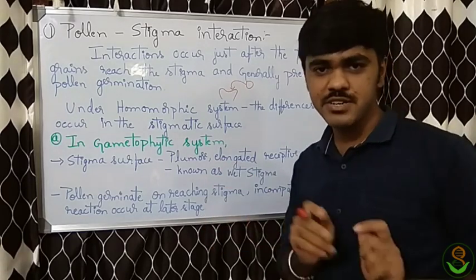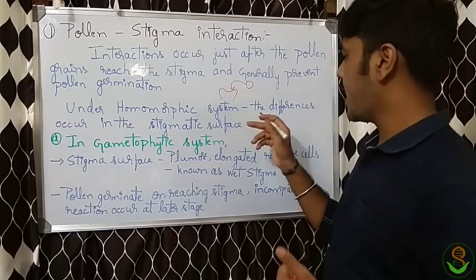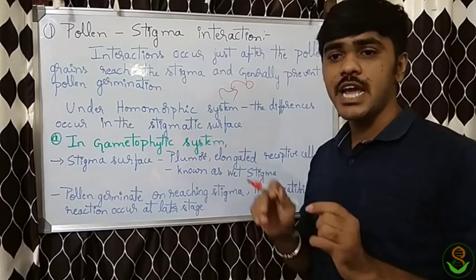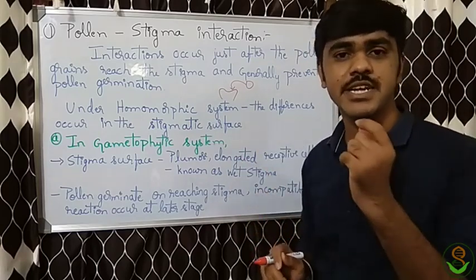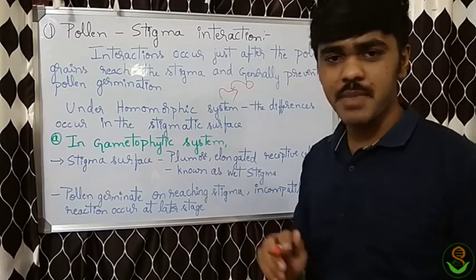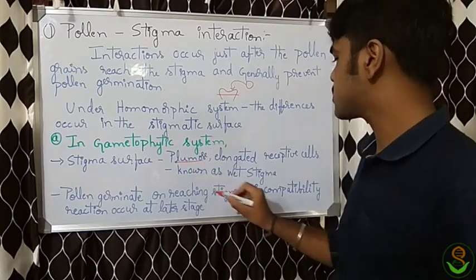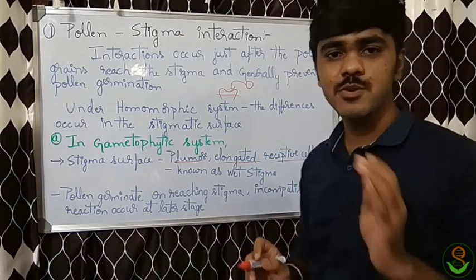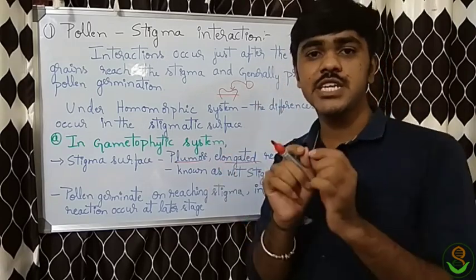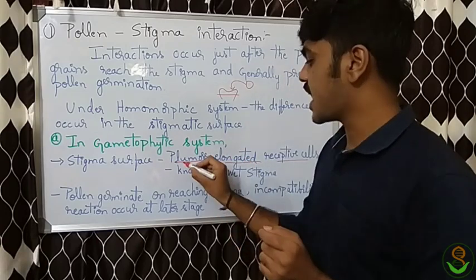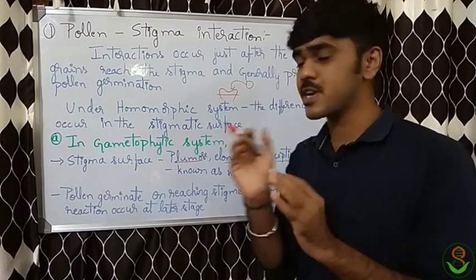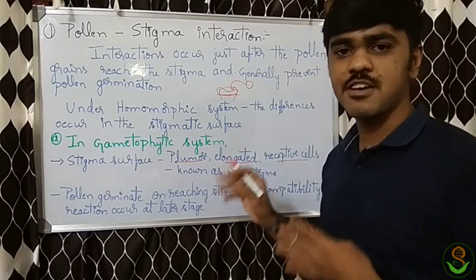Under the homomorphic system, there are two systems: sporophytic and gametophytic. Beginning with the gametophytic system — in this system the stigmatic surface is plumose and elongated with receptive cells. Plumose means it gives a feathery, soft look. Since receptive cells are present on this surface, we call it a wet stigma.